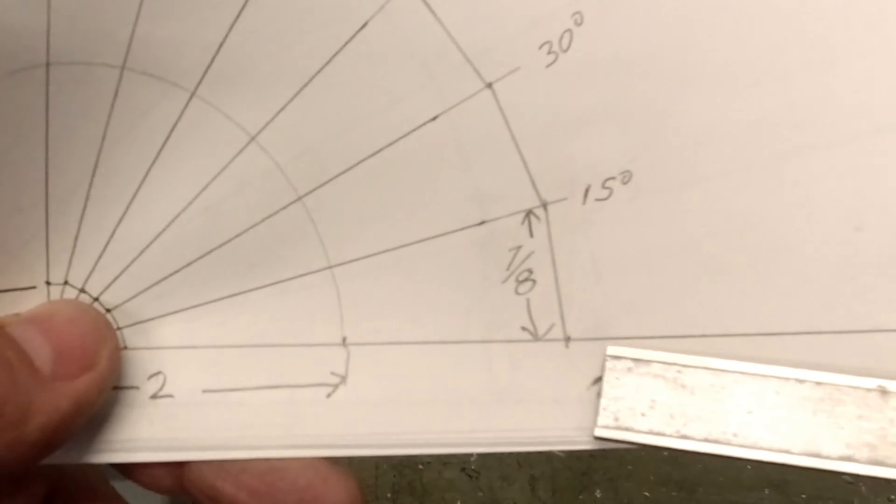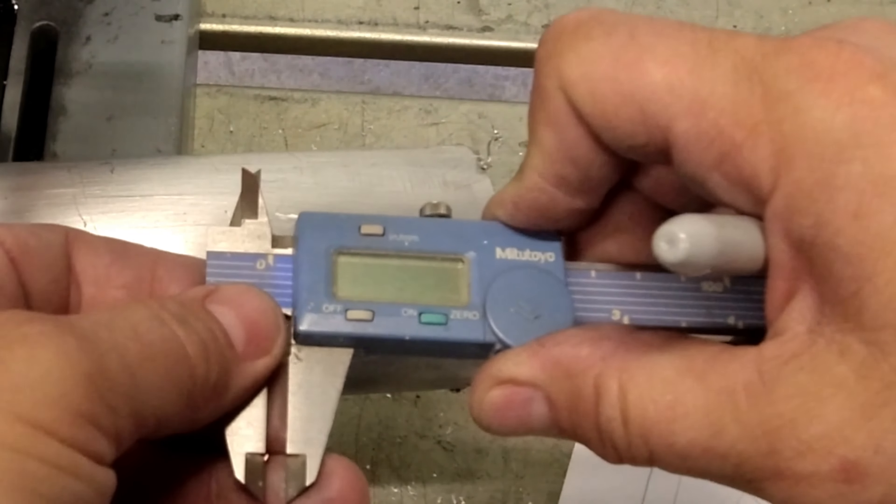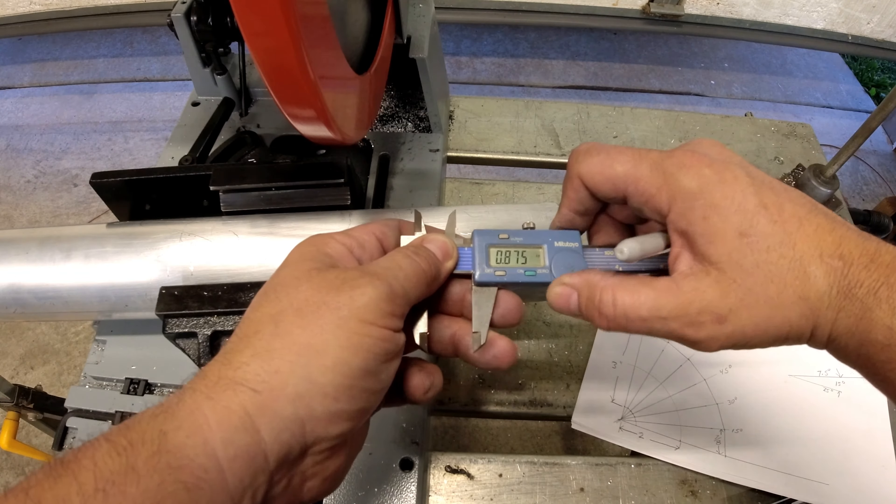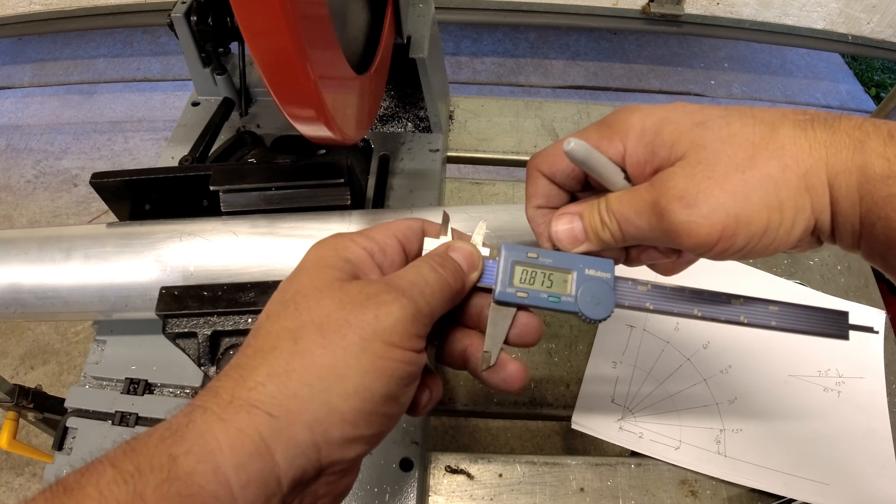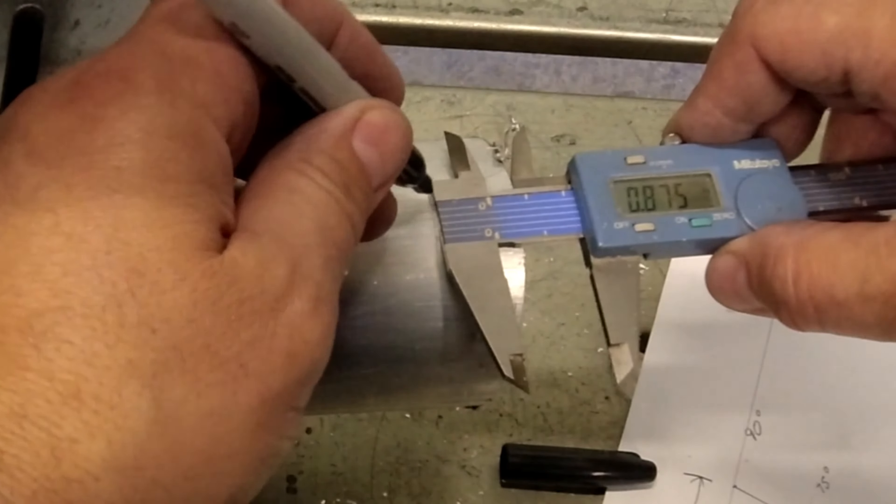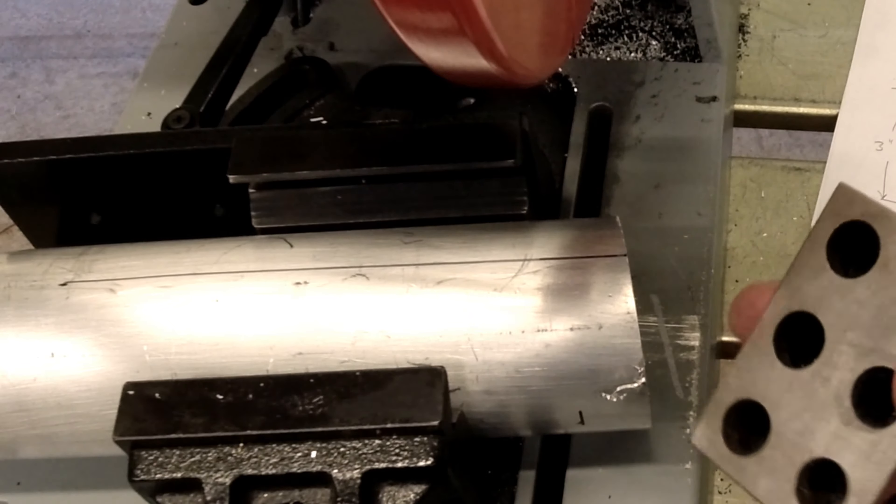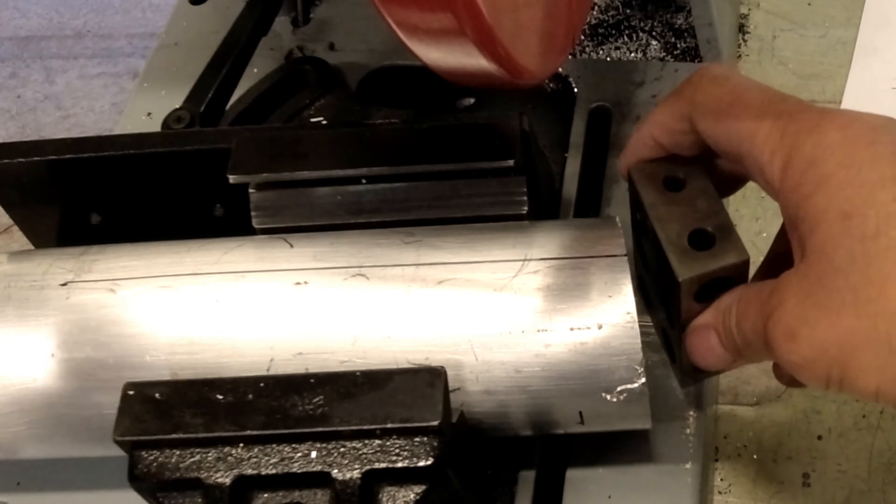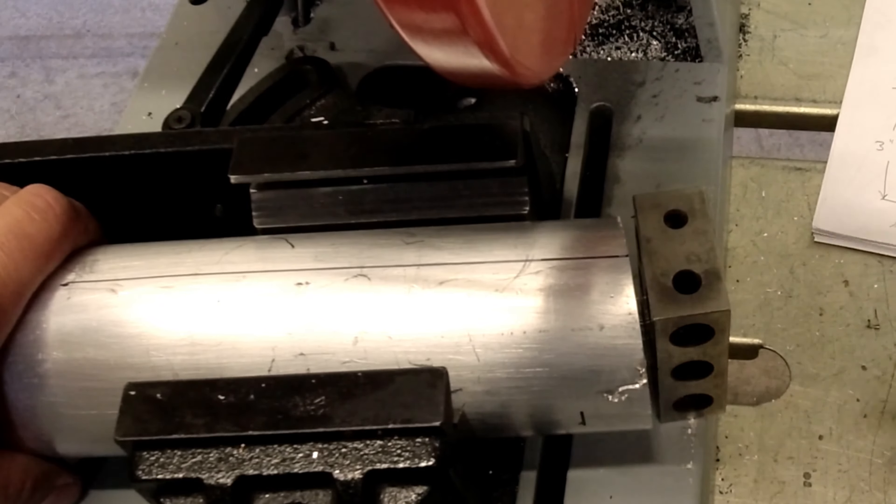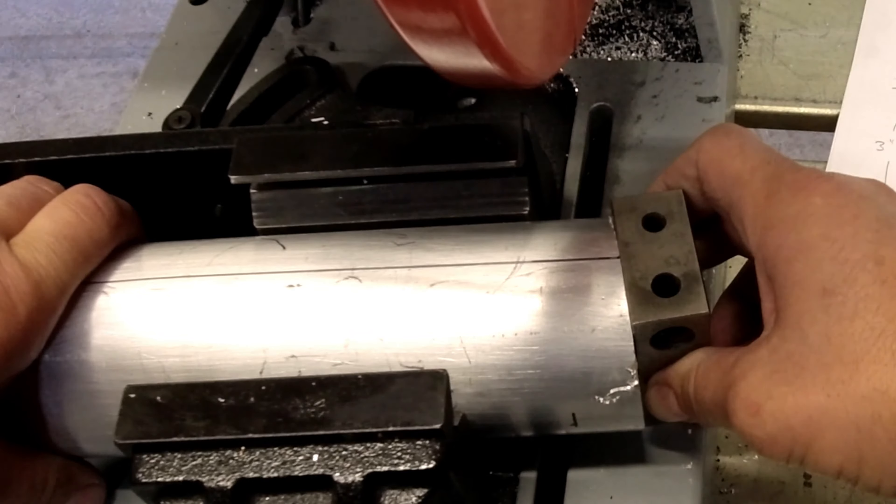All right, so now I need to lay out where our end cut's going to be. Now per our last layout, we said it needs to be seven-eighths, and that's seven-eighths off the peak. So I'm just going to set our caliper on seven-eighths, which is 0.875, and this might take a couple cuts to get this 100 percent right. So we're going to set this right on the edge and we're going to make a line.